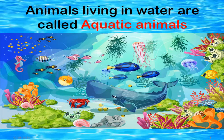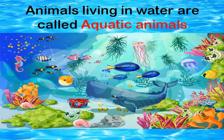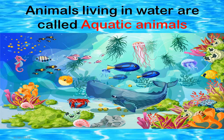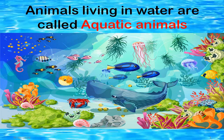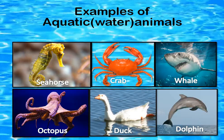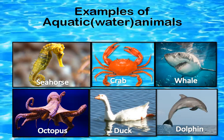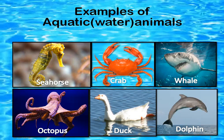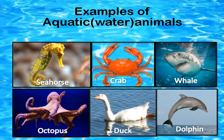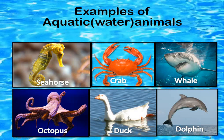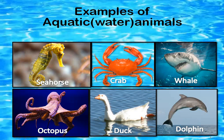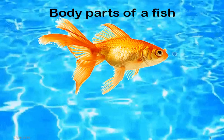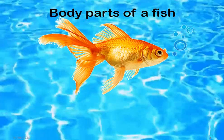Animals living in water are called aquatic animals. Examples of aquatic animals are seahorse, crab, whale, octopus, duck, and dolphin. Besides these, there are many, many water animals which are present either in rivers or in the ocean or sea.